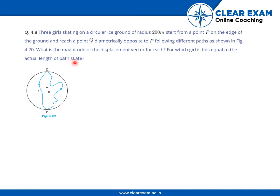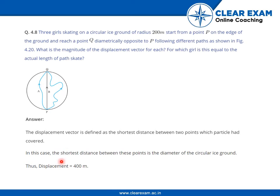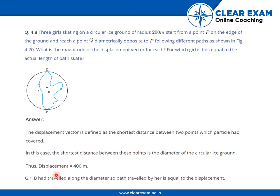The displacement vector is defined as the shortest distance between two points. In this case, the shortest distance between P and Q is the diameter of the circular ice ground, which is 400 meters. Girl B had traveled along the diameter, so the path traveled by her is equal to the displacement.